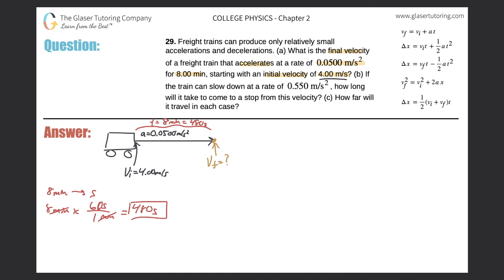Now I want to find an equation that relates these variables: time, acceleration, initial velocity, and final velocity.